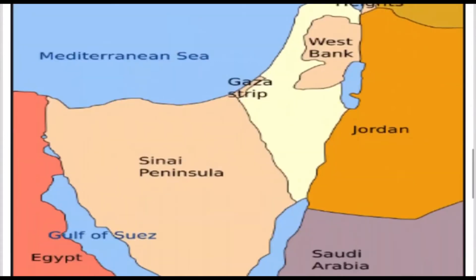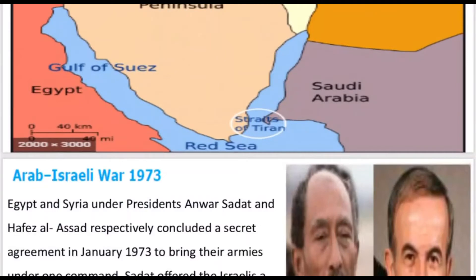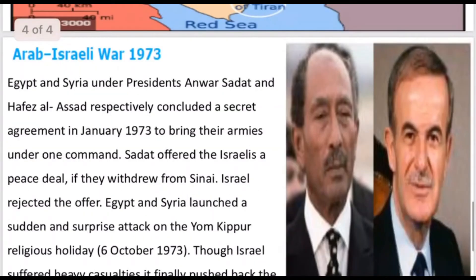The Arab-Israel War of 1973. The last war was in 1967, now we come to 1973. Egypt's President is Anwar Sadat and Syria's President is Hafiz al-Assad. Egypt and Syria, under Presidents Anwar Sadat and Hafiz al-Assad respectively, concluded a secret agreement in January 1973 to bring their armies under one command.